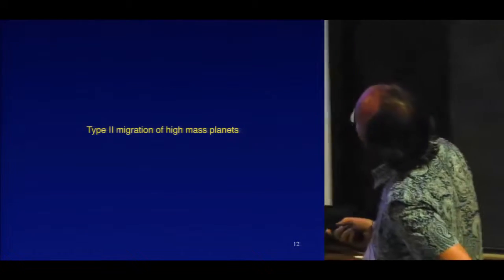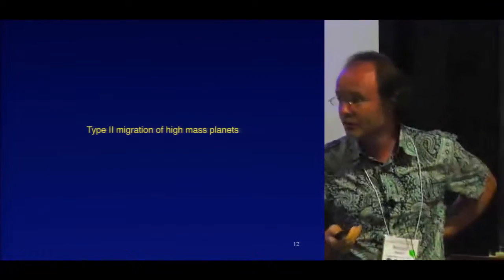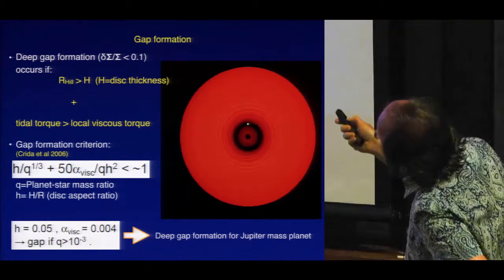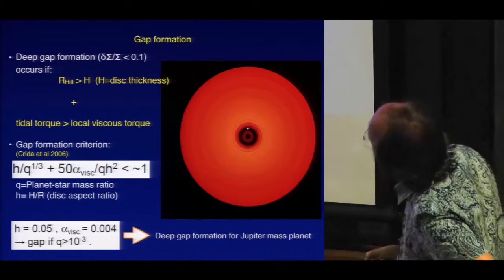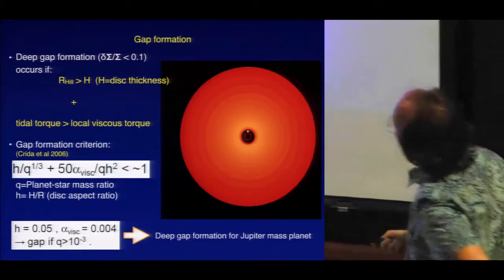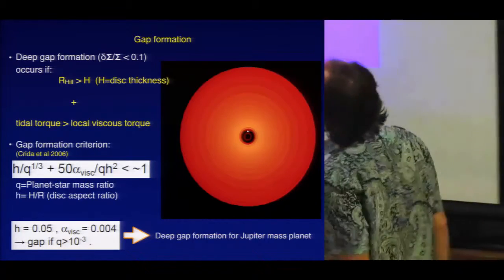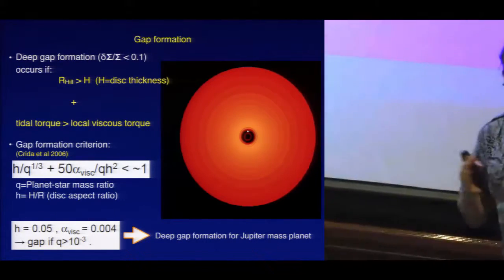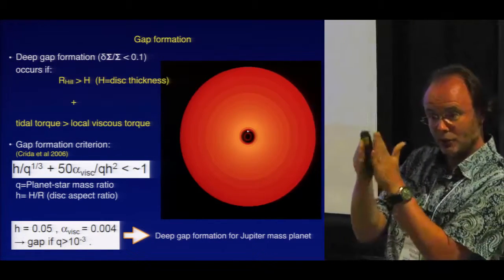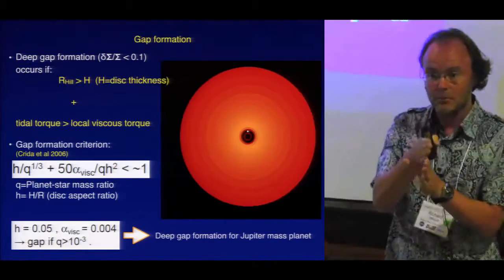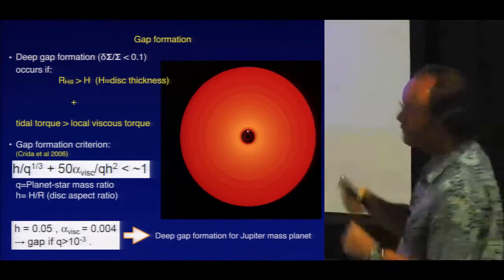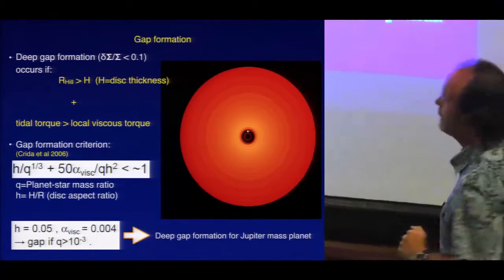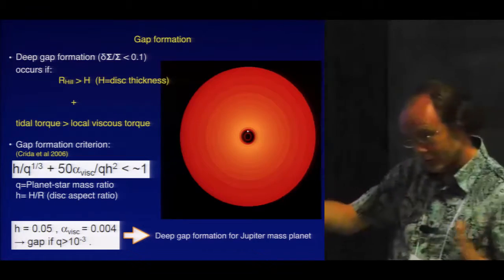Let me now talk about type 2 migration of high-mass planets. High-mass planets form gaps in the disk, giving a different mode of migration. Here's an animation showing a planet migrating inwards, forming a gap, and the gap following the planet in towards the central star. You get deep gap formation if two criteria are satisfied: first, that the Hill sphere radius of the planet is larger than the thickness of the disk — indicating that the spiral density waves are actually shock waves at the Lindblad resonances, allowing very efficient angular momentum transport to form the gap. Second, to sustain the gap, the tidal torque created by the planet pushing material away must exceed the viscous torque in the disk which is trying to close the gap.